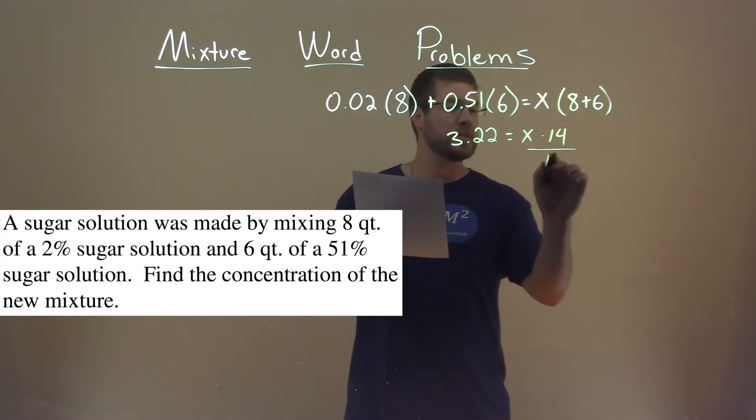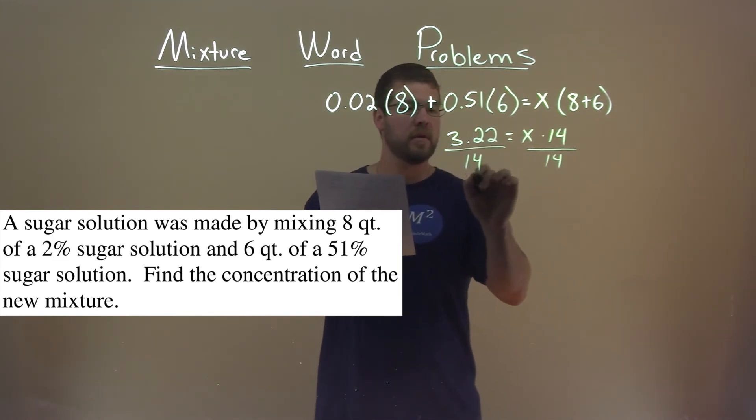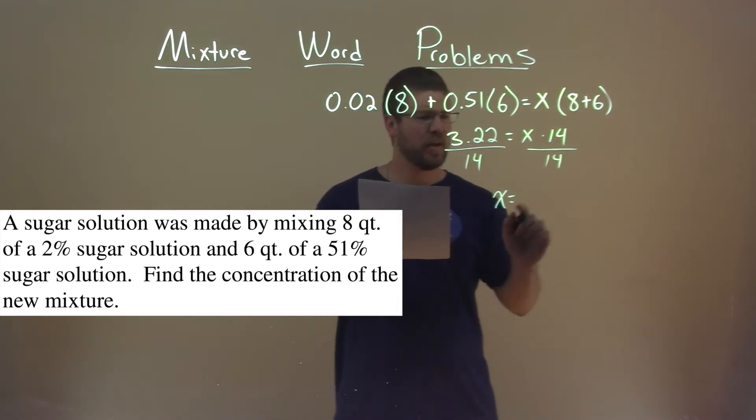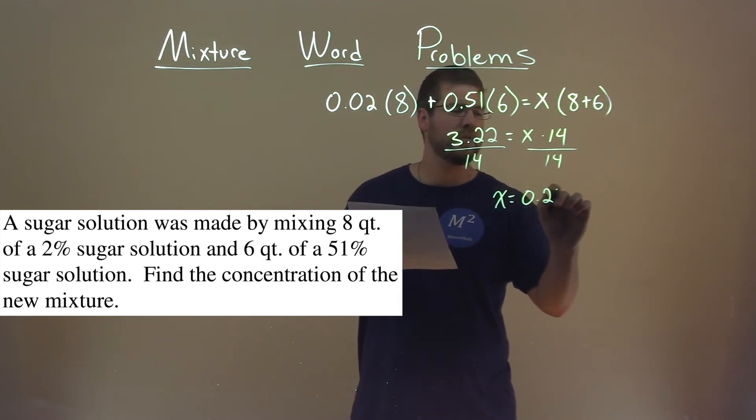We then can divide 14 to both sides, and we get x equals 3.22 divided by 14, and it comes out to be 0.23.